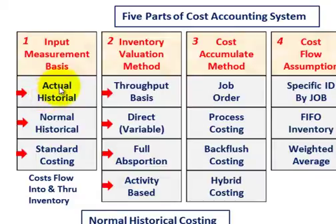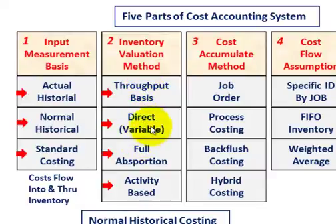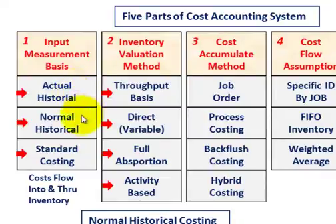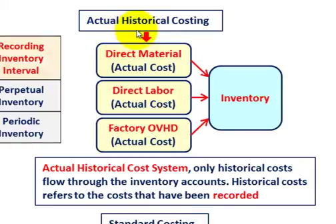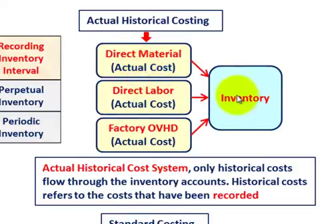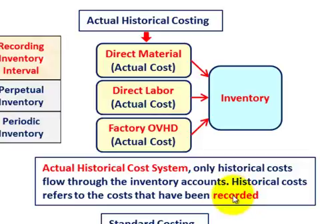For our input measurement basis, we have actual historical costing, normal historical costing, or standard costing. For actual historical costing, direct materials, direct labor, and factory overhead all go in at their actual cost — the historical cost incurred for the period — and they flow into the inventory account at their actual costs. Historical costs refer to the actual costs you experienced for the period or for the product flowing through at the time.